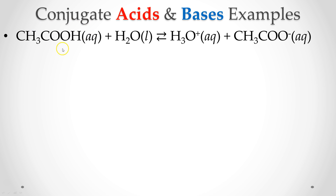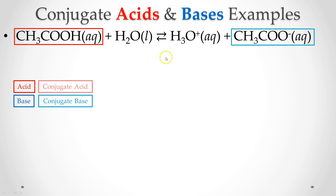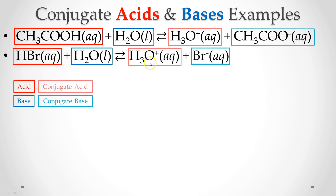A couple more examples: acetic acid plus water makes the hydronium cation plus the acetate anion. Acids are in red, bases in blue, conjugate acids in light red, conjugate bases in light blue. Acetic acid is my acid; what's left when the proton is donated is my conjugate base. Water is my base, and after it accepts the proton it becomes the conjugate acid — that's the hydronium. Similarly, hydrobromic acid plus water makes the hydronium cation plus the bromide anion. Hydrobromic acid is my acid, the bromide anion is my conjugate base, water is my base, and after it accepts the proton, that is the conjugate acid.